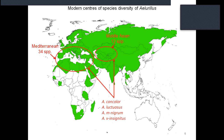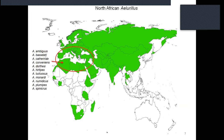The modern centers of species diversity of Allurellus lie in the Mediterranean and Middle Asian parts of the Palearctic: 34 species in the Mediterranean and 12 species in Middle Asia, with four shared species — Allurellus concolor, leucostus, ernegrum, and venustus. Eleven species among the Mediterranean ones are known from North Africa.